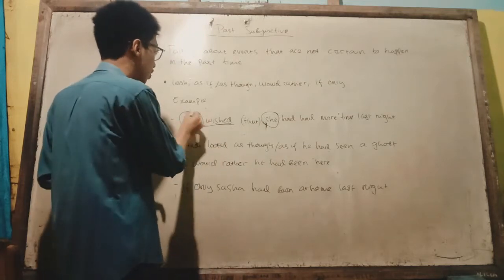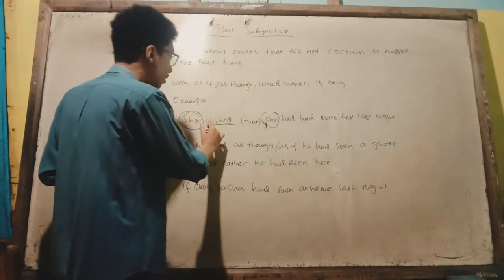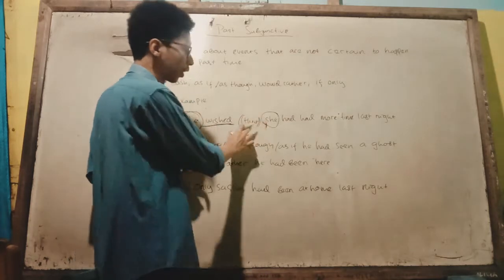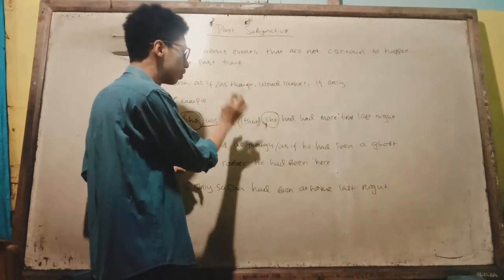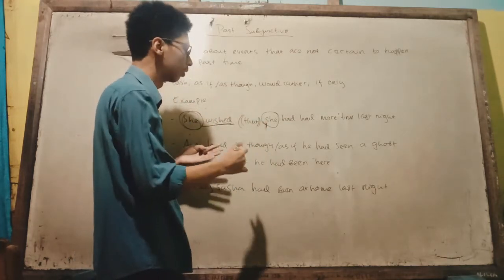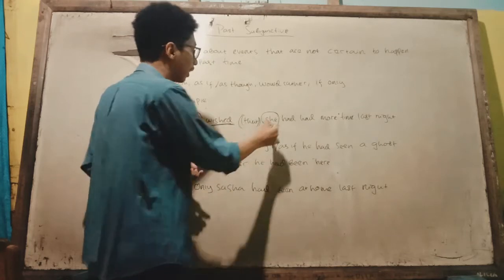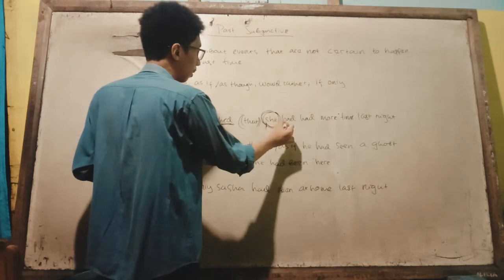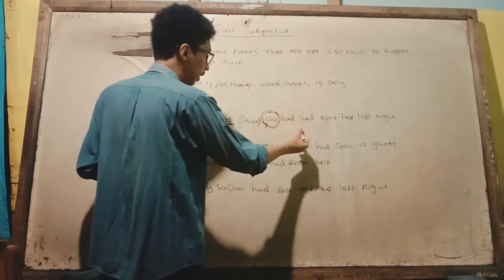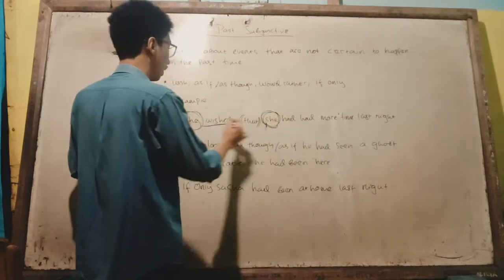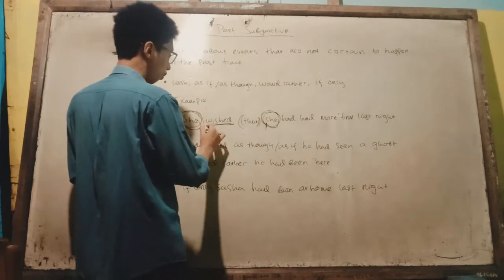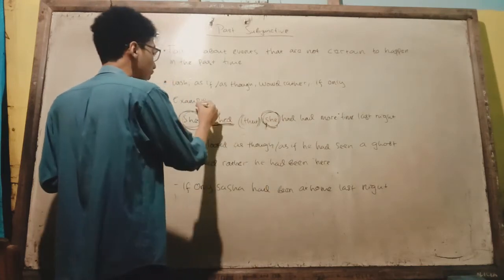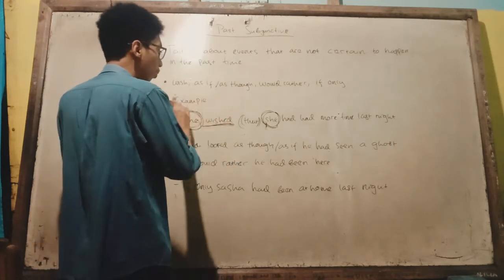The first subject is 'she,' then 'wished.' Then 'that' — which is optional, you can use it or not. Then the second subject. Here, we just used 'wished' without adding anything extra before it.